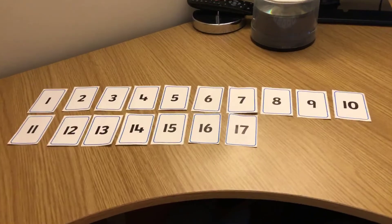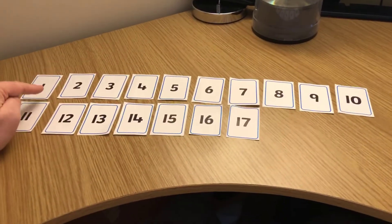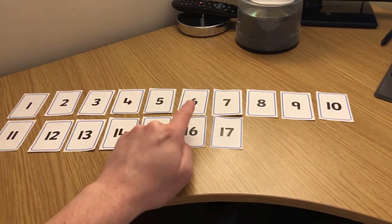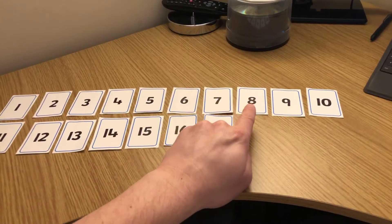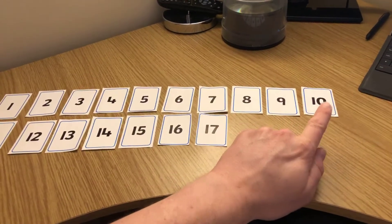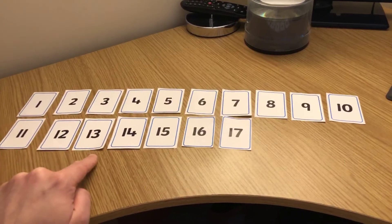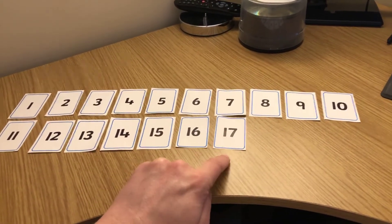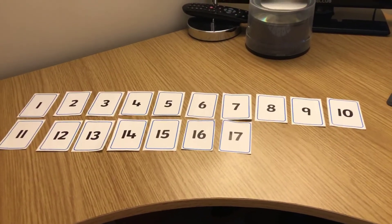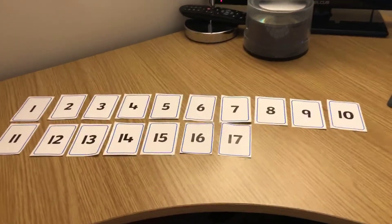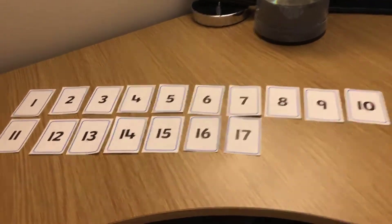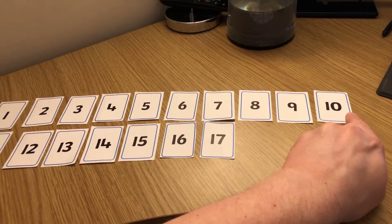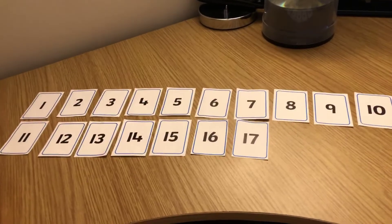When you're ready they should look like this. Let's just count them together. One, two, three, four, five, six, seven, eight, nine, ten, eleven, twelve, thirteen, fourteen, fifteen, sixteen, seventeen. It's actually the number of days on our other number line too, isn't it? Seventeen. So if you look at the number cards this way, we can see that seventeen has got one row of ten, like one lot of ten, and then one, two, three, four, five, six, seven ones. Okay, a ten and a seven.